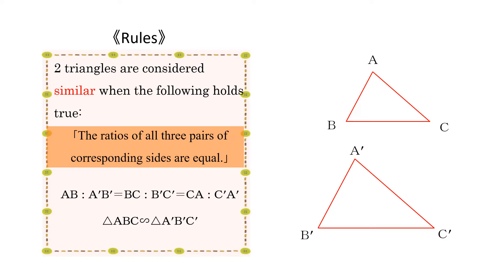Now let's explore further by looking at a figure. Look at the figure on the right. There are two triangles. And if the conditions AB to A'B' equals BC to B'C' equals CA to C'A' are satisfied, we can say that the two triangles are similar.